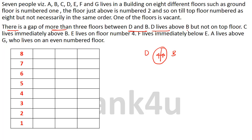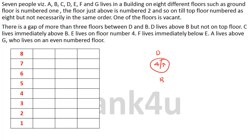The next clue is: D lives above B, so D will be living above B. Between them it has to be 4 or more floors. But D cannot be on the top floor. So D can be placed on certain floors, and counting at least 4 floors below D, B can be placed — it can even be a gap of 5. These are the 2 possibilities we consider here.